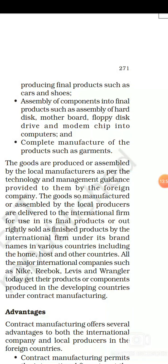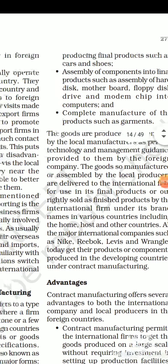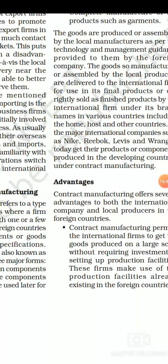Contract manufacturing has three forms. The first is production of certain components — such as automobile components or shoe uppers — to be used later in producing final products like cars and shoes. The second form is to assemble components into a final product; for example, when making a computer you require many parts like motherboard, hard disk, RAM, and modern chip — assembling these components gives you the finished computer. The third form is complete manufacture of products, such as garments.